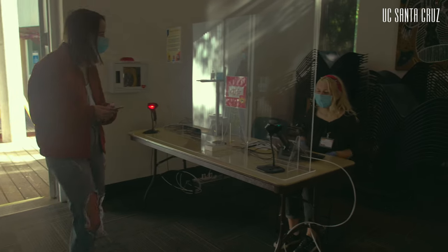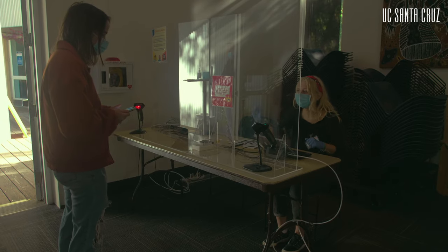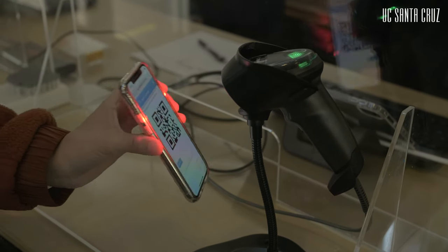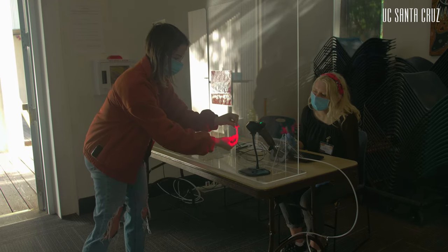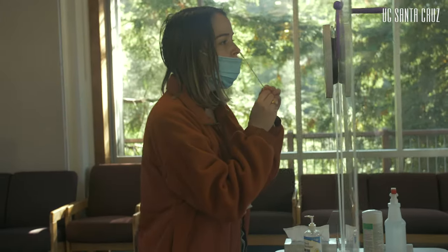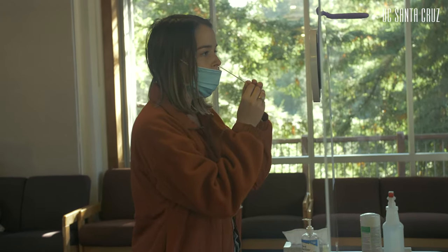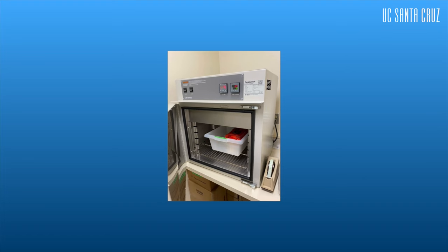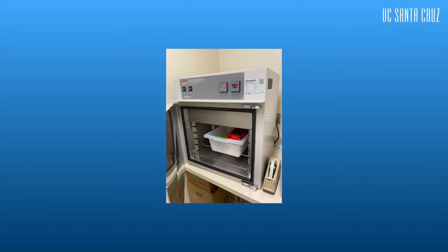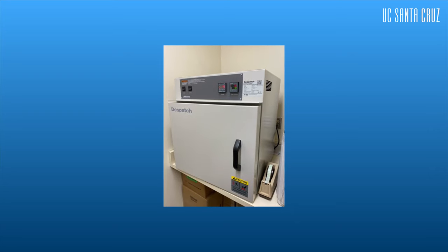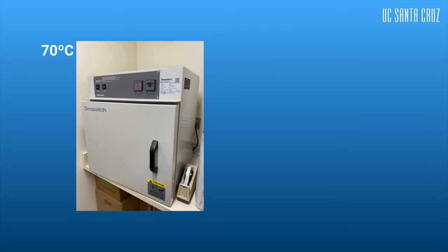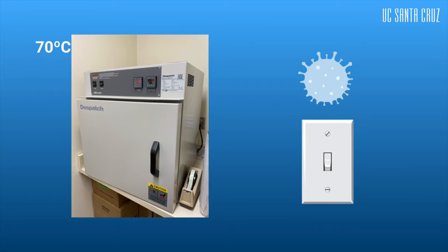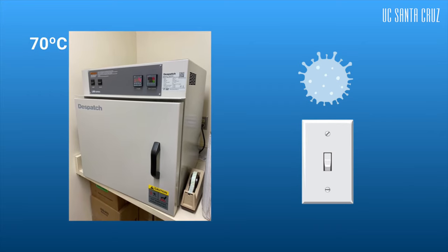Once kits are assembled, they are sent to providers to collect patient samples. The providers take one of these tubes and scan the tube's barcode to register the patient. A swab will then be conducted and they return the kit to us by courier. Once kits arrive back at our campus, they are brought to the lab and sterilized in an oven at 70 degrees Celsius. This is a safety measure designed to ensure that the virus is deactivated and the genomic material is maintained.